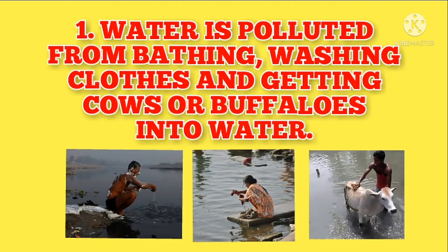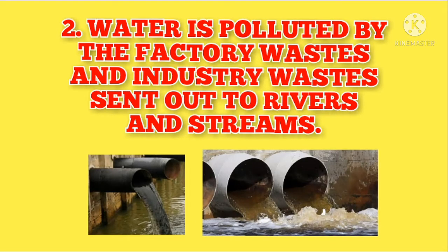Number one: water is polluted from bathing, washing clothes, and getting cows or buffalos into water. Number two: water is polluted by factory wastes and industry wastes sent out to rivers and streams.